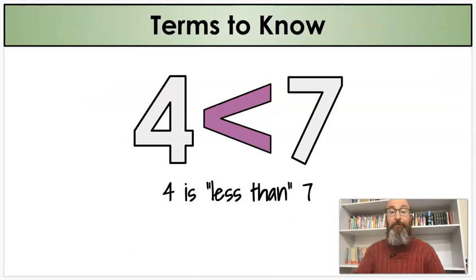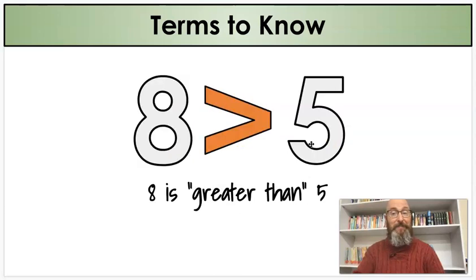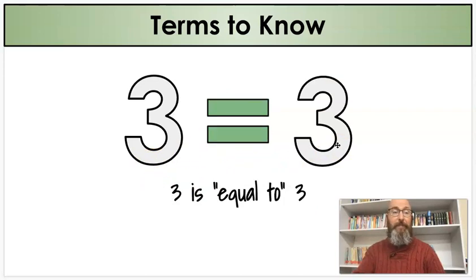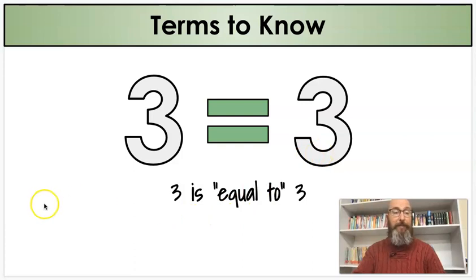For example, I'm going to show you these. Four is less than seven. That makes sense? Let's try another one. Eight is greater than five. Or three is equal to three. So that's why we have those symbols.